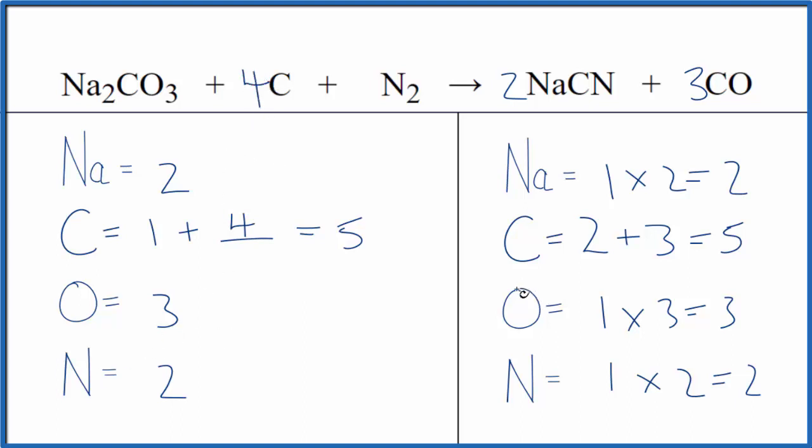We're done. This equation is balanced. If you wanted to write the states, they look like this. This is Dr. B with the balanced equation for Na2CO3 plus C plus N2. That gives us NaCN plus CO. Thanks for watching.